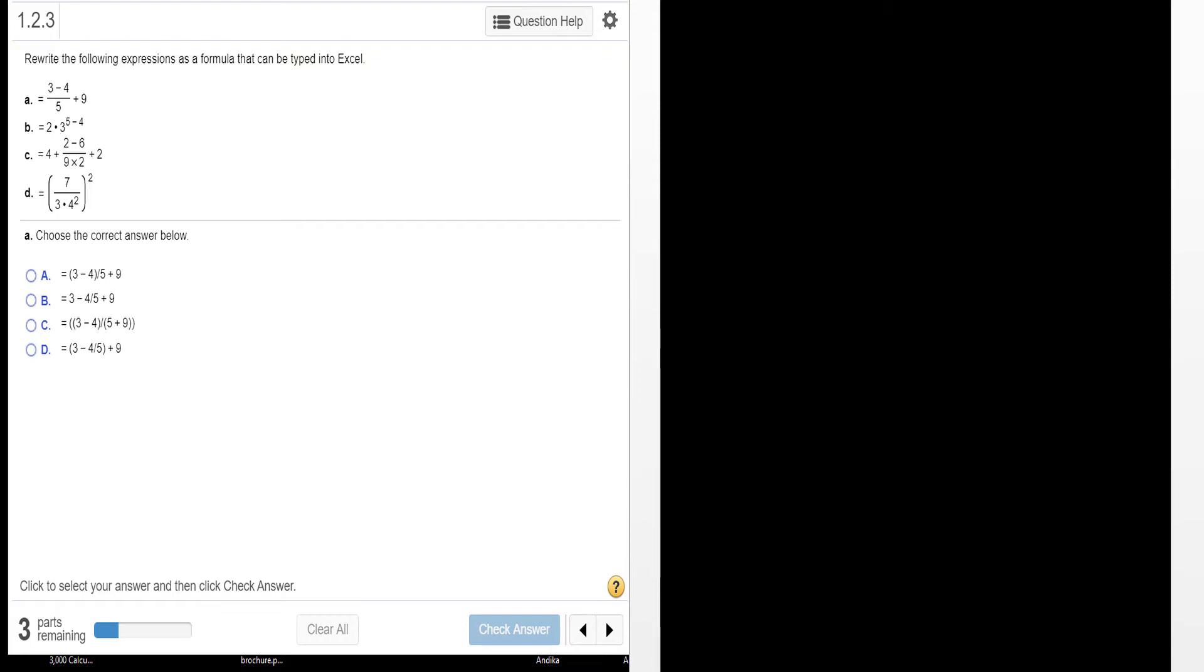Now this particular problem asks you to rewrite the following expressions as a formula that could be typed into Excel. So we start with this one here for A. We have 3 minus 4.